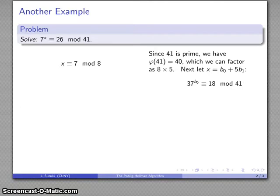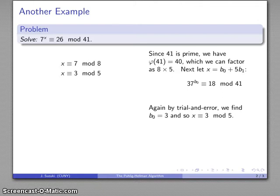I can try out different possible values of b₀ from 0 up to 4. I can see 0 doesn't work, 1 doesn't work, so I might as well start with 2. By trial and error, I find that x is congruent to 3 mod 5, and I can now solve this Chinese remainder problem.